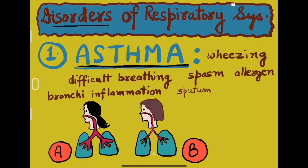Asthma is a very dangerous disease. Its symptoms include wheezing — a particular sound from the chest. Breathing becomes very difficult; it is said that the patient feels as if an elephant has placed its foot on the chest, so heavy does the pressure feel. There are also body spasms, sort of fits. These are the symptoms of asthma.